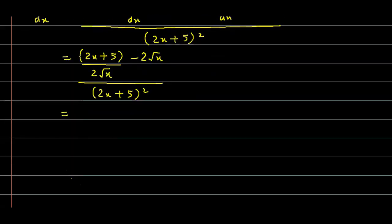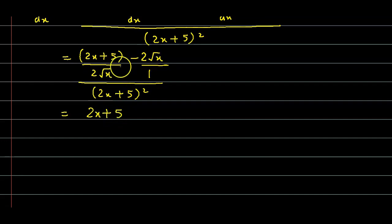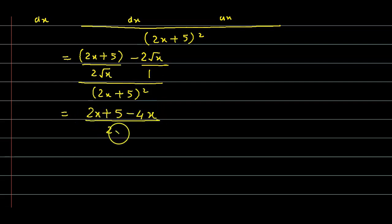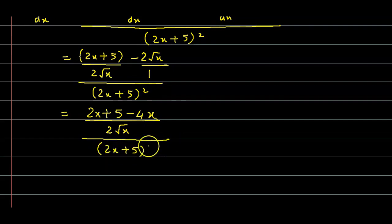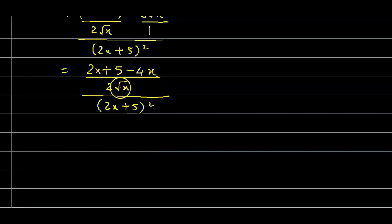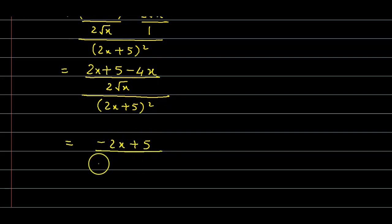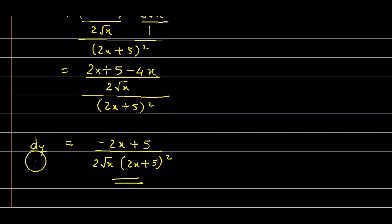Simplifying the numerator by equalizing the denominator: 1 · (2x + 5) = (2x + 5); and 2√x · 2√x = 4x. So the numerator becomes (2x + 5 − 4x) / (2√x) = (−2x + 5) / (2√x). Therefore dy/dx = (−2x + 5) / [2√x · (2x + 5)²].